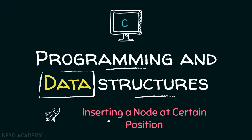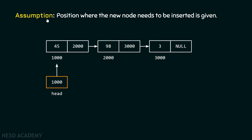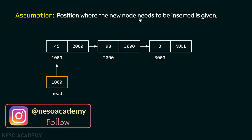In this presentation, we will learn how to insert a node at a certain position of a singly linked list. Let's get started. The assumption I am making here is that the position where the new node needs to be inserted is given to us. Let's say the position is three, where we want to insert our node.